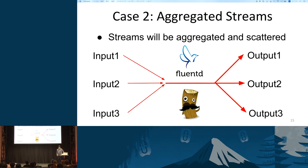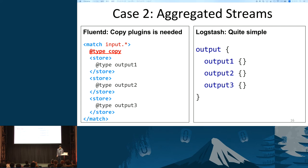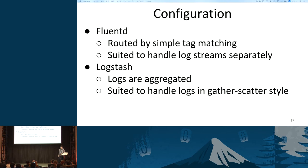For the second case, let's assume we want to aggregate logs from all inputs and send aggregated logs to several destinations. In this case, Logstash can be configured quite simply for unconditional scattering. To make the equivalent configuration with Fluentd, you have to use the copy plugin. To summarize: Fluentd and Logstash have different configuration styles. Generally speaking, Fluentd is suited to handle multiple streams separately, while Logstash is good at handling logs in a gather-scatter style.